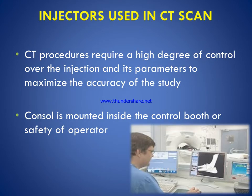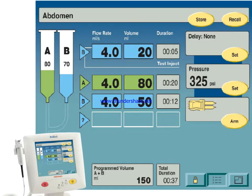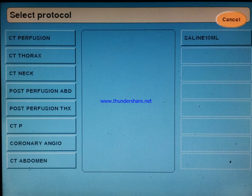For CT procedures, a high degree of control over the injection and its parameters is required to maximize the accuracy of the study. The console is mounted inside the control booth for the safety of the operator. The flow rate is programmed from 0.1 to 9.9 ml per second, with dual programming offering a choice of flow rate per volume or flow rate per duration. For example, for abdomen protocol, a flow rate of 4.0 ml per second with 20 ml contrast volume and 0.5 second duration may be used.